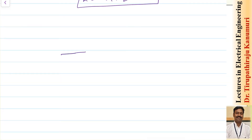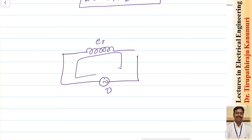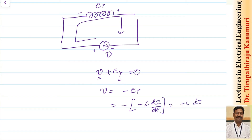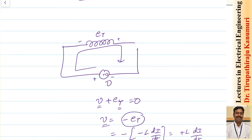Taking the loop as a whole and applying KVL: V + ET = 0, so V = −ET = L·(di/dt). This confirms that the applied voltage equals L·(di/dt). The induced EMF always opposes the cause — it tries to maintain zero net EMF in the loop, consistent with Lenz's law.